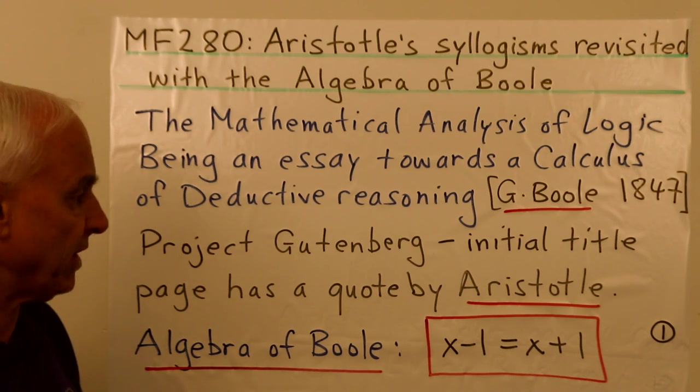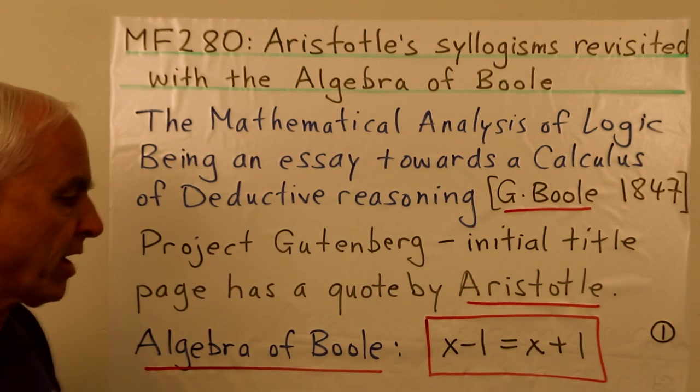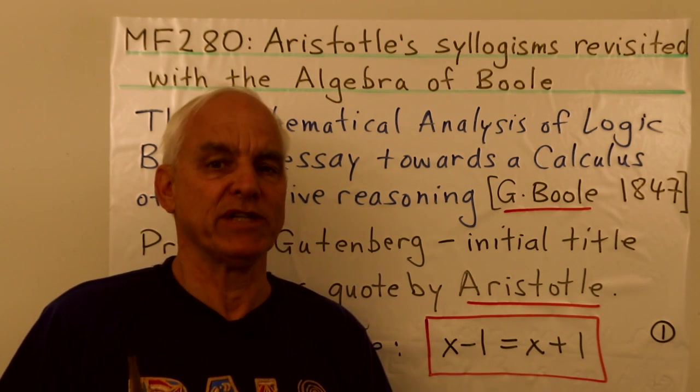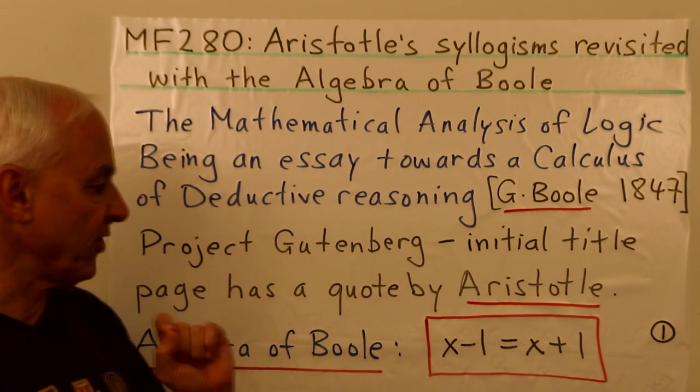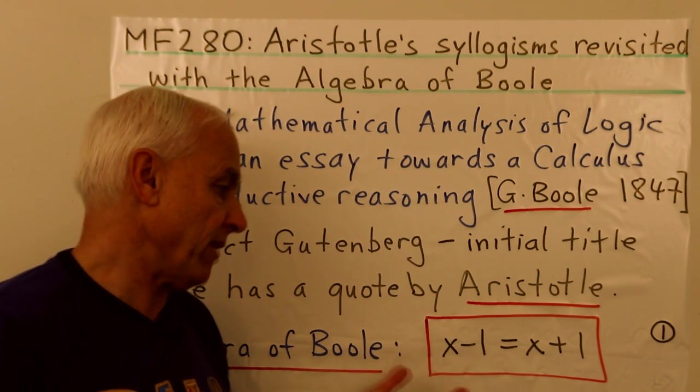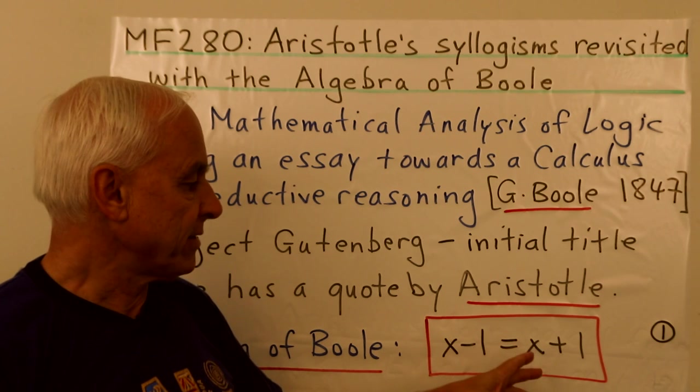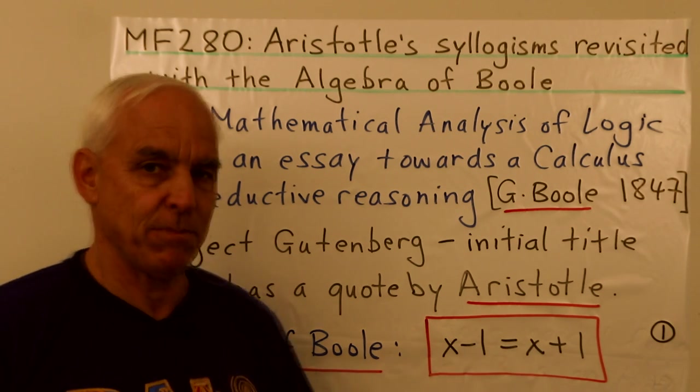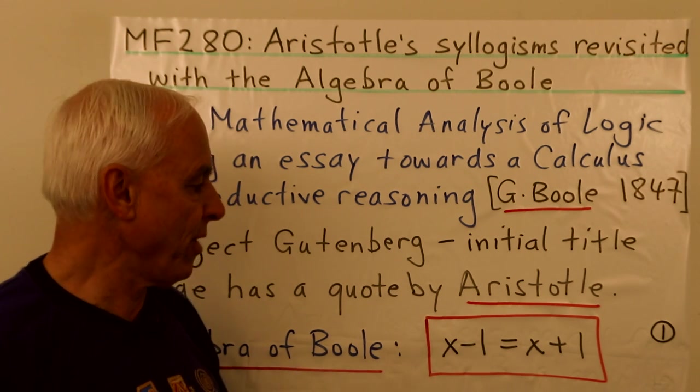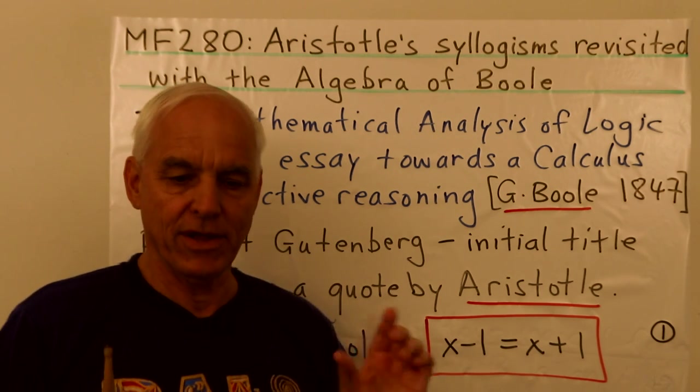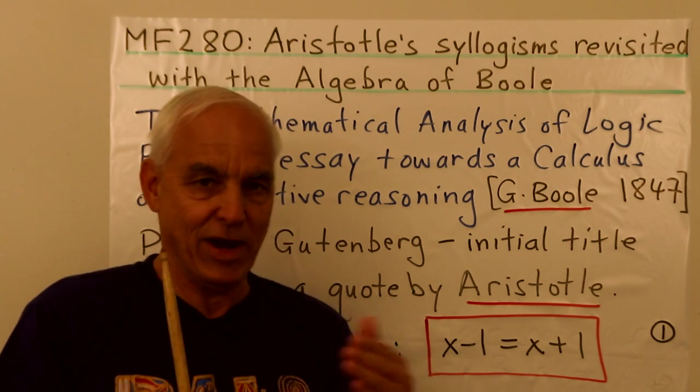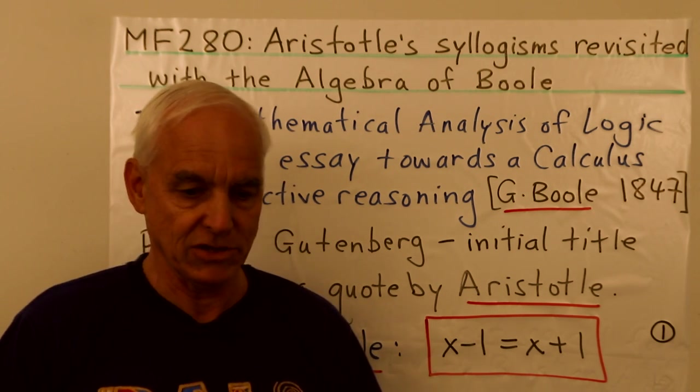Now I might just make a note that if you do have a look at Boole's work, you might see that it's a little bit different from the way I'm presenting it. And one of the big differences is that he tends to use minus signs a lot. So like he might write x minus one or one minus x. But for us, that's the same as x plus one, because mod two minus one is the same as plus one. That's just a little hint to make translation of what he's doing to what we're doing a little bit easier.